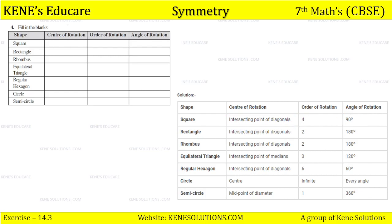For a rhombus, the center of rotation is the intersecting point of the diagonals, order is 2, and the angle of rotation is 180 degrees. For an equilateral triangle, the center of rotation is the intersecting point of the medians, the order is 3, and the angle of rotation is 120 degrees.